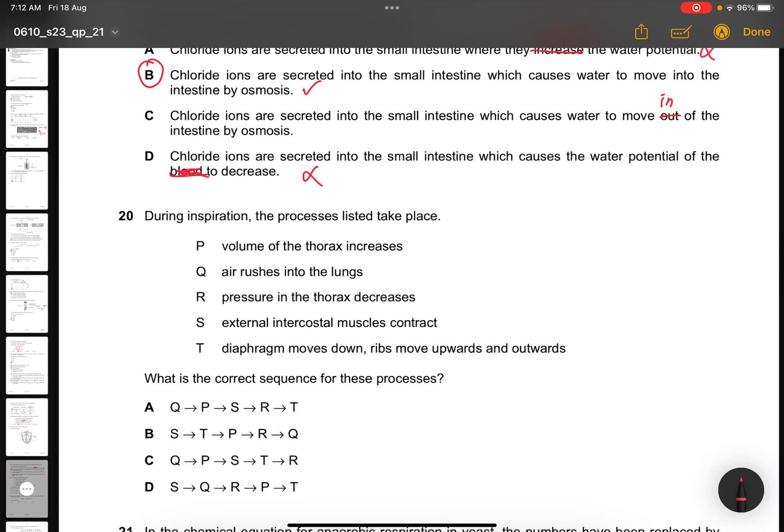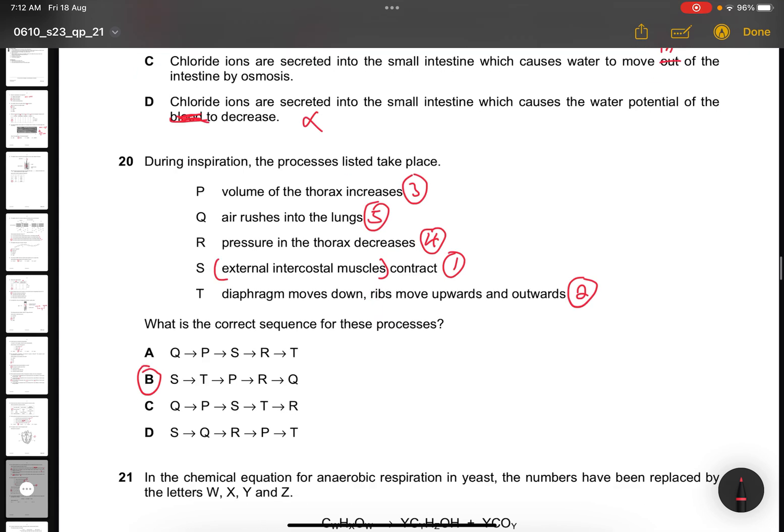Question 20. During inspiration, the processes listed take place. What is the correct sequence for these processes? The answer for this one is B. Every time you start, whether it's inspiration or expiration, start off with mentioning the muscles first. The muscles will contract first. Then the diaphragm will be the second one. Then will be the volume of the thorax increasing because you are breathing in. Then the pressure will become next. And lastly, will be the air entering into the lungs.